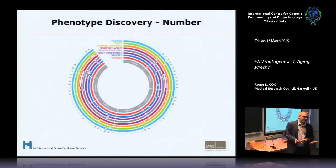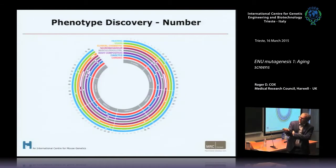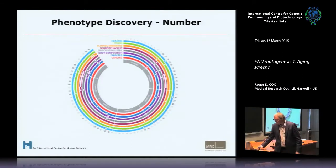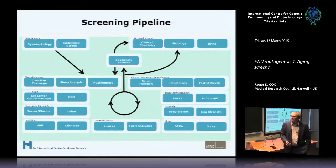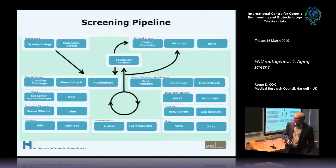There are different types of screens: a hearing screen, vision screen, clinical chemistry, neurobehavior, musculoskeletal, body composition, diabetes, and cardiac. Over the 80 weeks of the screen, tests are applied at different times, selected so they hopefully don't interfere with each other. These tests are also repeated over time — it's not just a single time point — over the full 18 months of the screen.